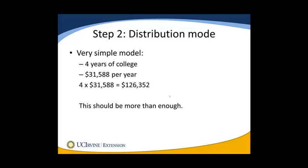College planning is a simple project — there are only four years to plan for. So if we take $31,588 and multiply it by four, we end up with $126,352. Since we're using the last year of college costs rather than the first year, we're going with a much higher number than needed. Therefore, multiplying by four should give us more than enough money for college, since the last year should be almost 20% to 30% higher than the first year.